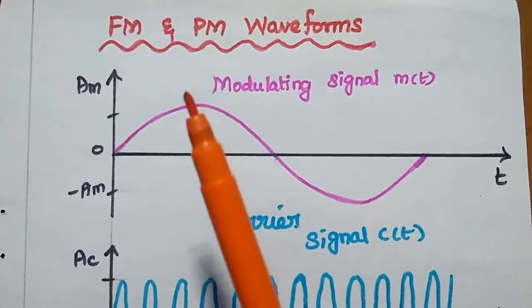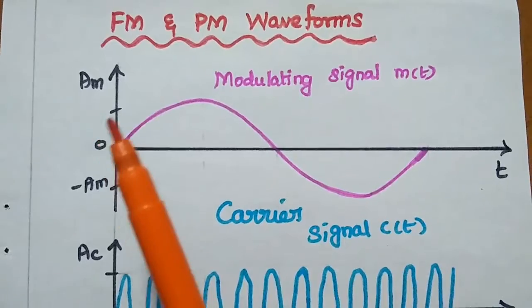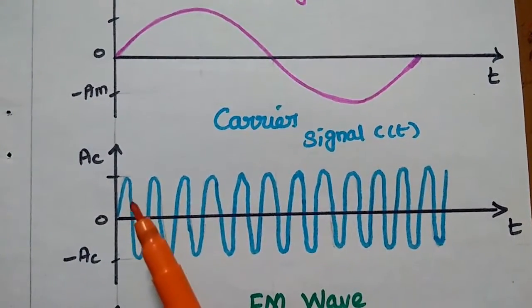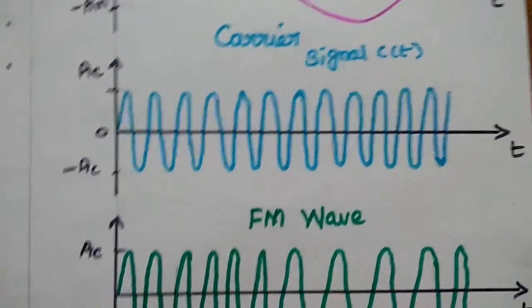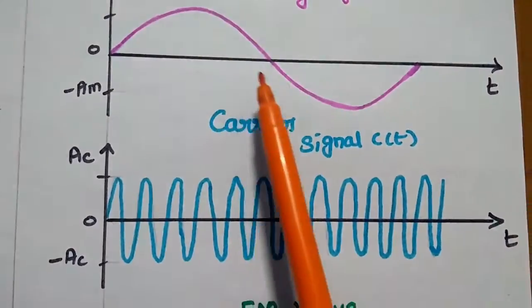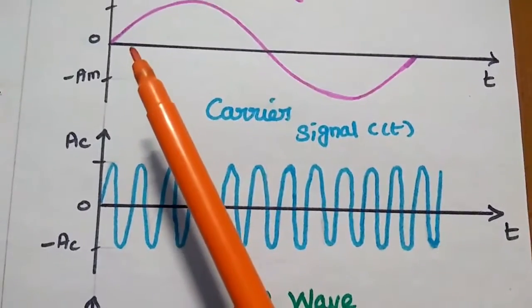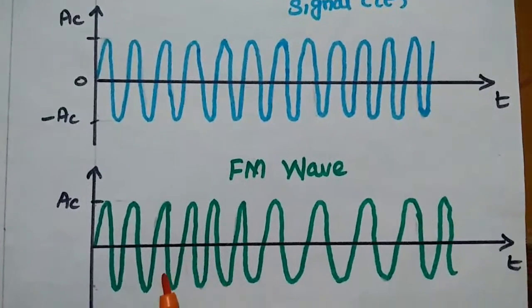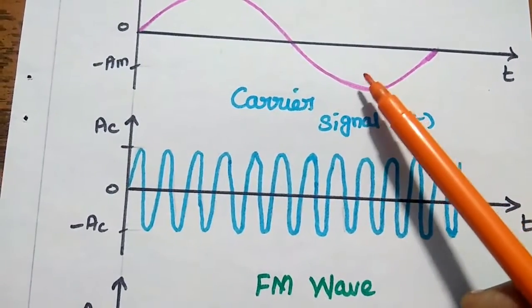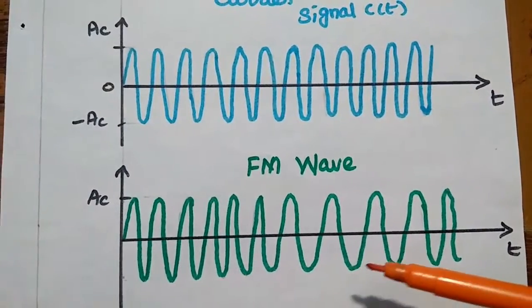For signal representation of FM and PM waveforms, here we have the modulating signal M(t) where AM is the maximum amplitude of the message signal, and the carrier signal C(t) with maximum amplitude AC. In the frequency modulated wave, during the positive half cycle of the modulating signal, the carrier frequency is increased. That means if the amplitude is increased, then the frequency is also getting increased. When the amplitude of the modulating signal is decreased, the respective modulated wave frequency is also getting decreased.